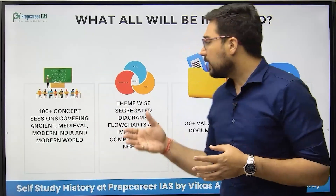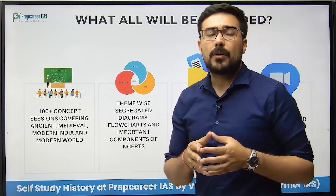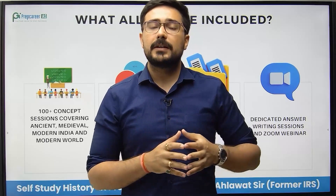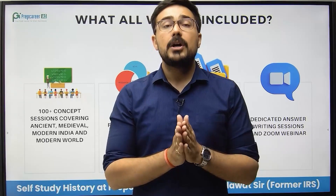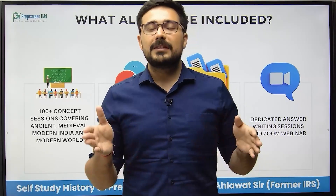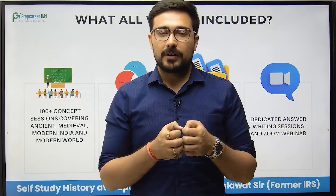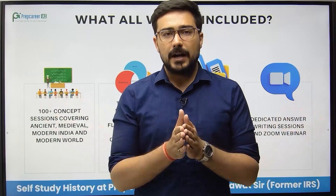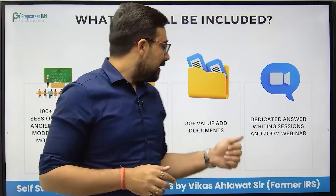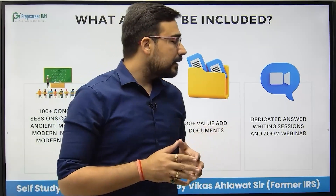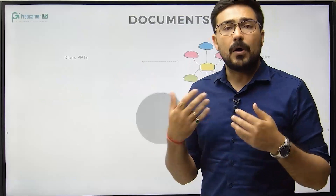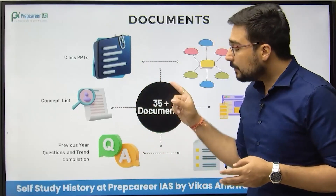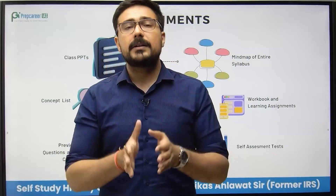The sessions cover theme-wise segregated diagrams, flow charts, and important NCRTs. Combining all NCRTs of ancient, medieval, modern, and world history from various boards, about 25–26 NCRTs are covered, all designed in coherent form. There are 100-plus sessions in total, 30-plus value-added documents, dedicated answer writing sessions, Zoom sessions for doubt solving, PBT classes, a concept list, PYQs, mind maps, workbooks, learning assignments, and self-assessment tests so that you can evaluate what you have learned.